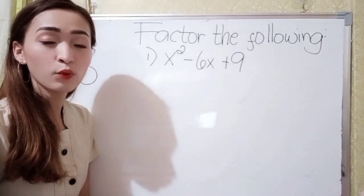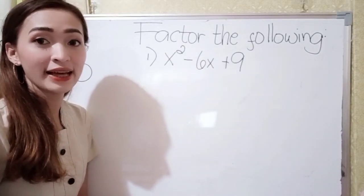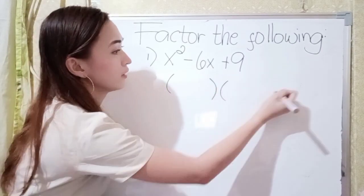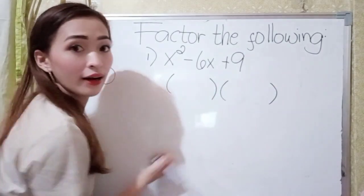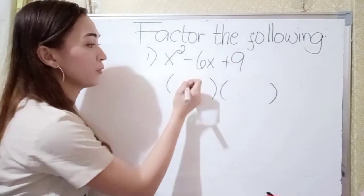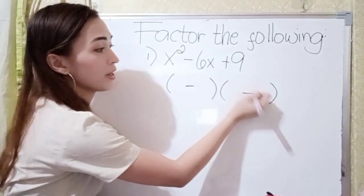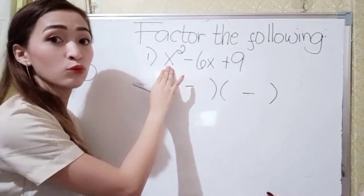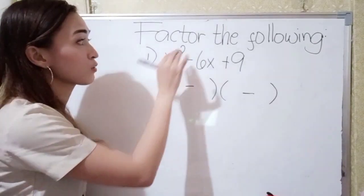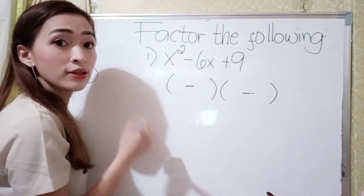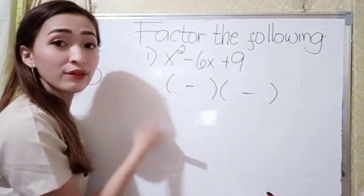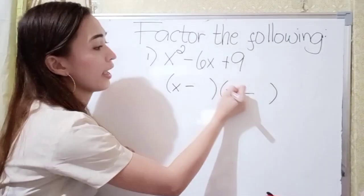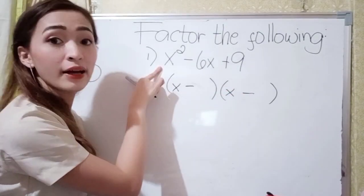So we have number 1: x squared minus 6x plus 9. We have the grouping symbol. If this is negative, put negative here and also here. Now, what is the square root of x squared? The square root of x squared — or the factors of x squared — is x and x, because x times x is x squared.